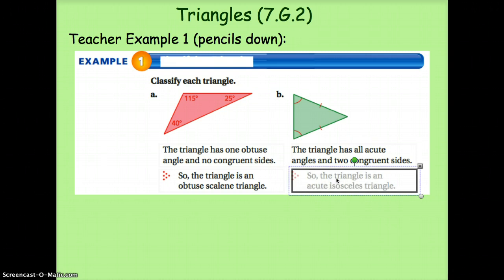So we know this must be an acute isosceles triangle. Acute because all angles are acute, and isosceles because two sides are the same length.